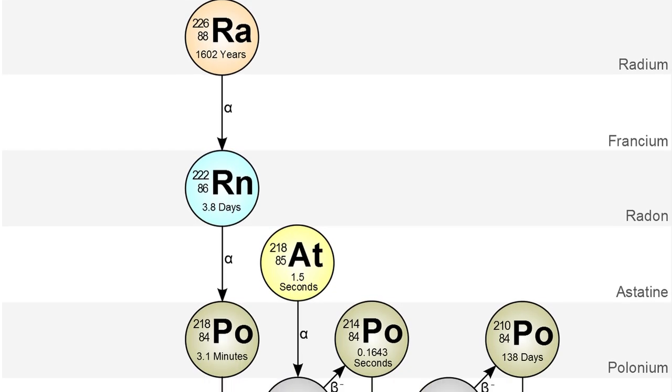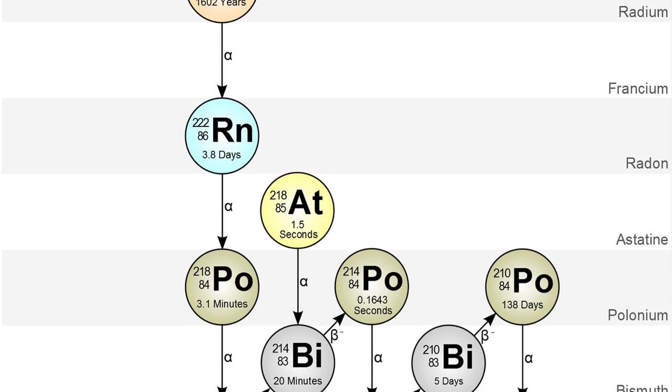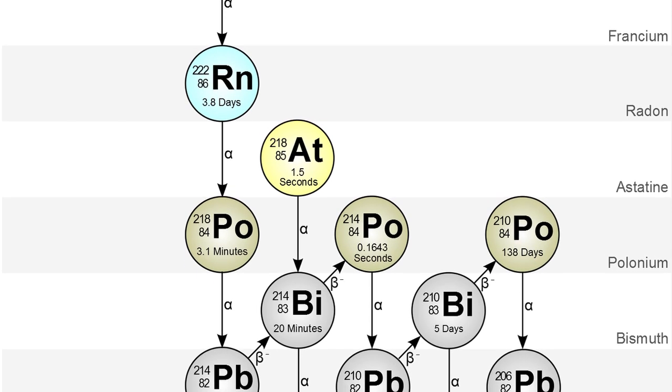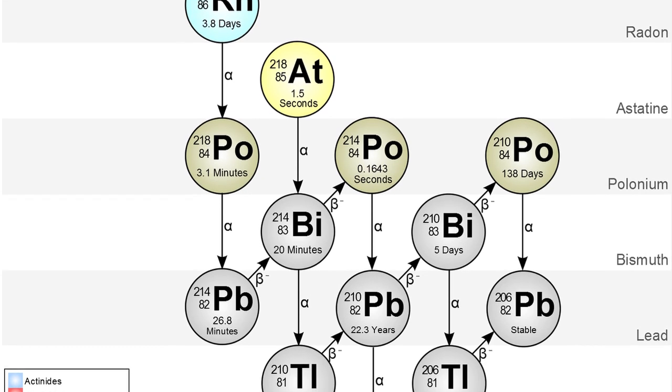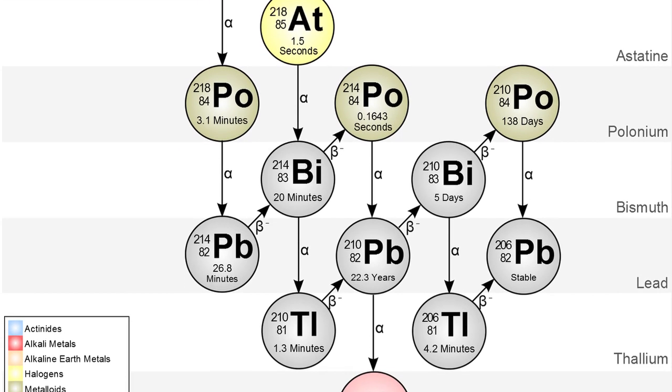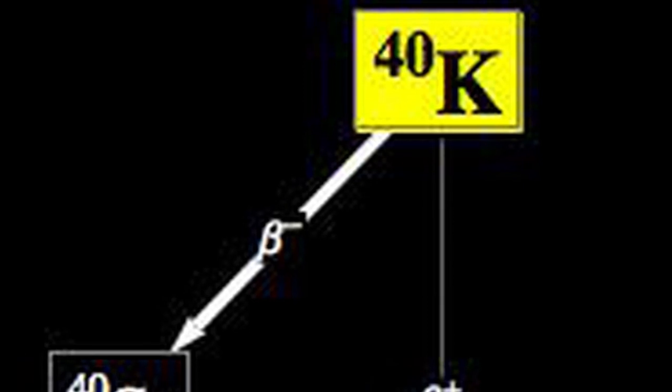Wherever we find ratios of uranium to lead, we can cross-check it with ratios of the other isotopes in the decay chain. This means that a single measurement of uranium-lead is actually several measurements of multiple ratios. The same concept applies to potassium-argon dating.